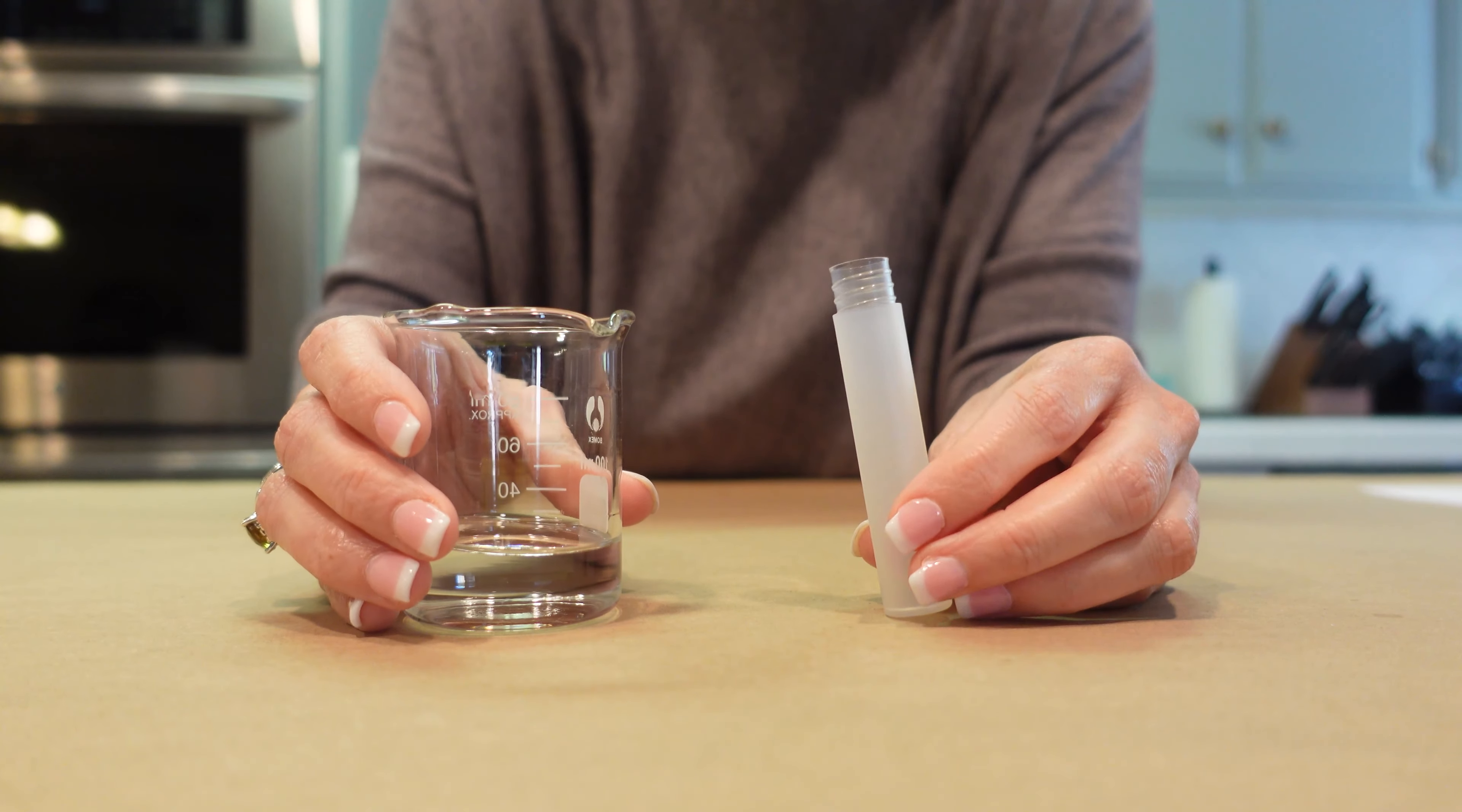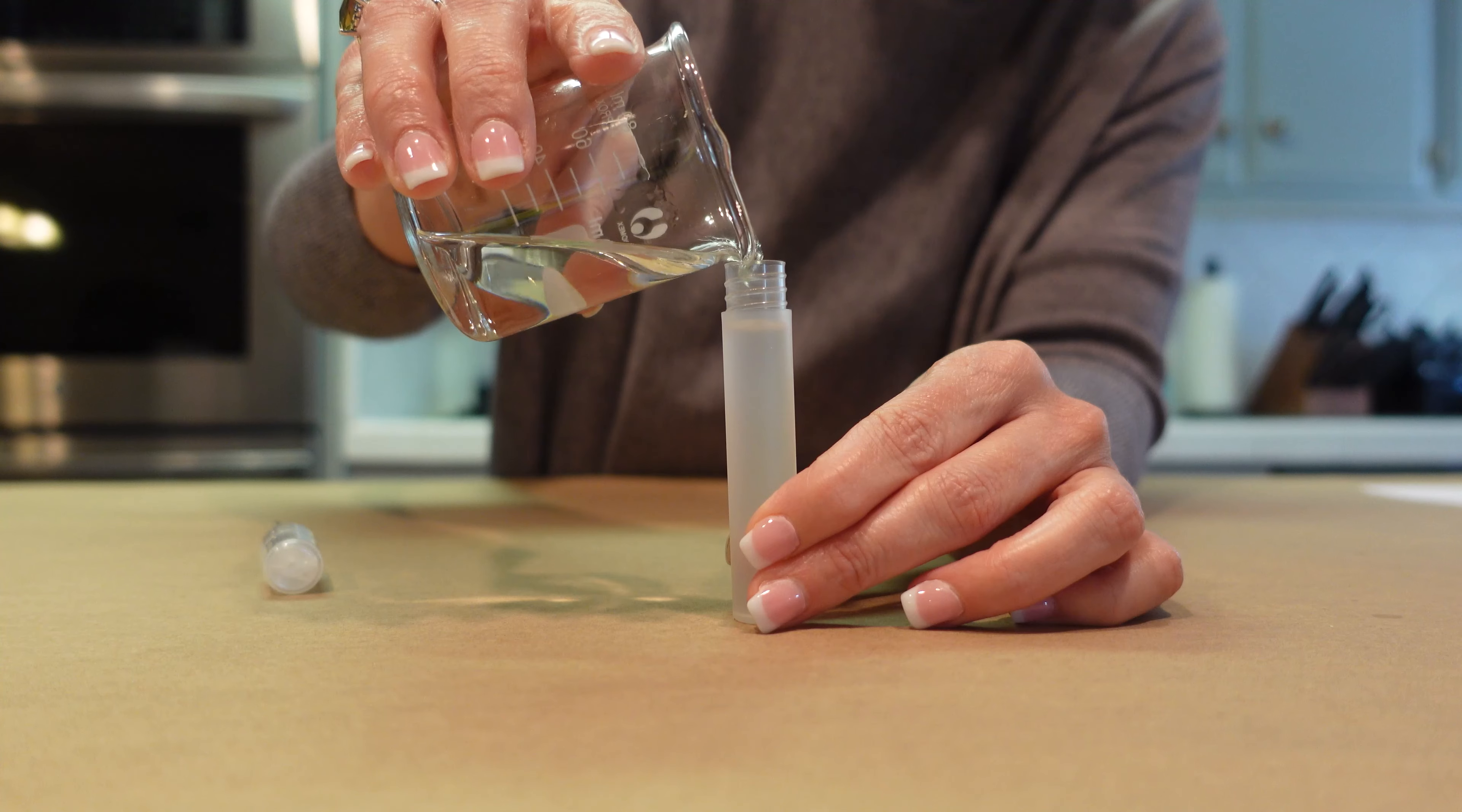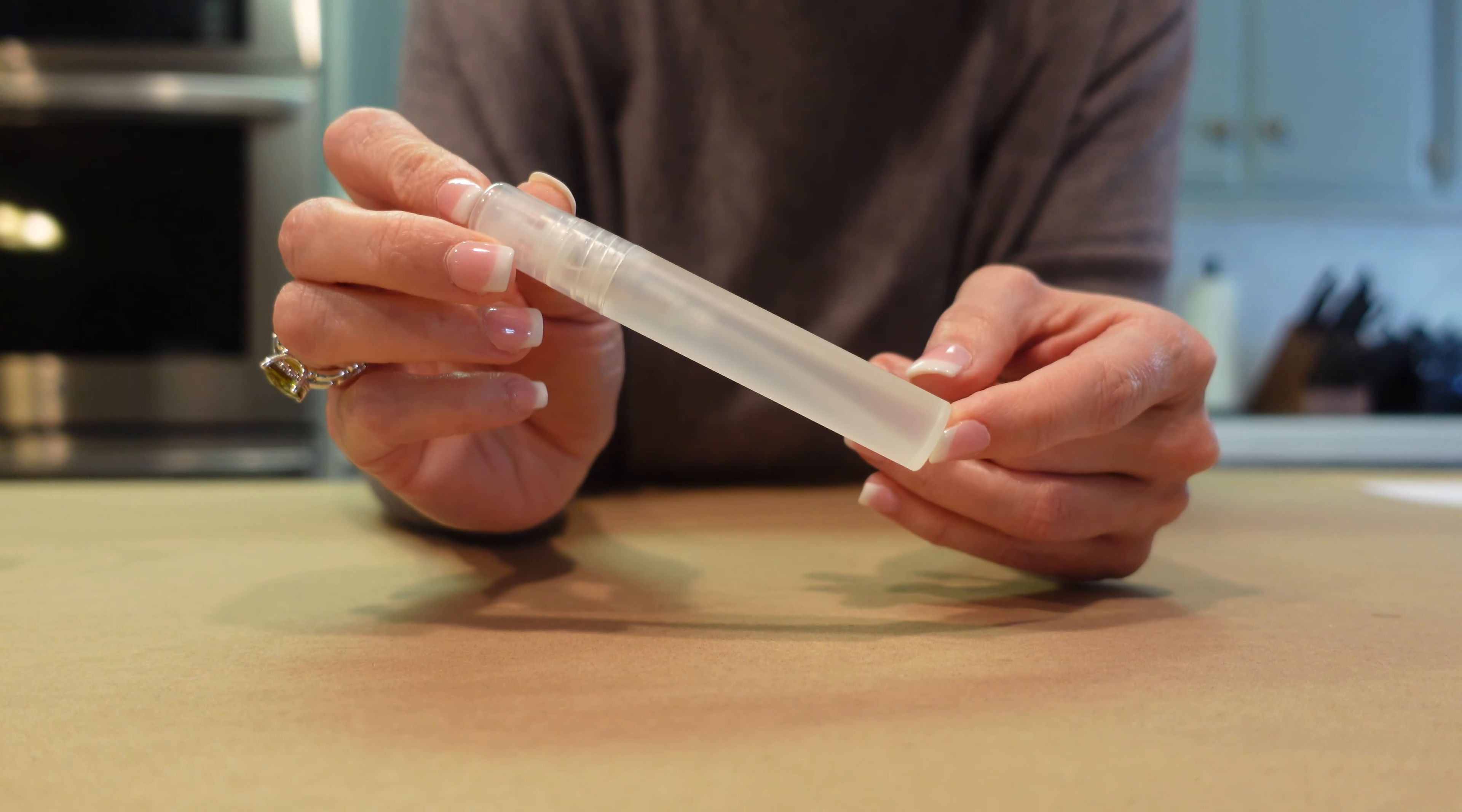The last thing we're going to do is go ahead and just pour our finished product into these cute little spray bottles. I got these from Berlin Packaging, and I'll leave a link to these cute little bottles in the description box for you. But you just have to be careful not to fill it past that little lip right here, because then the perfume likes to spill over when you put the lid on—it gets overfilled.